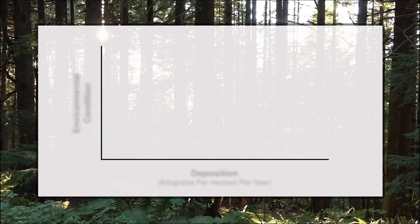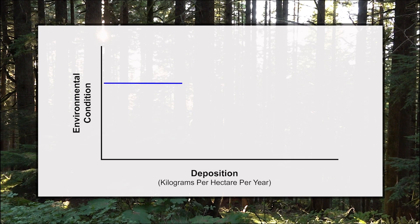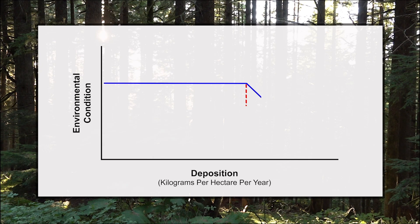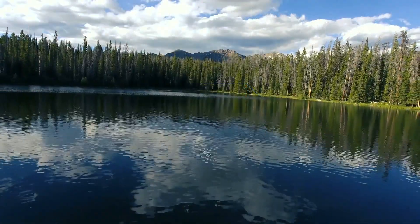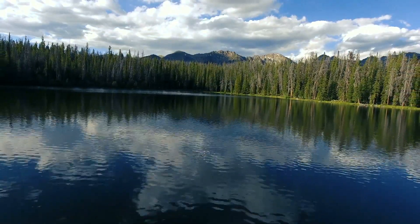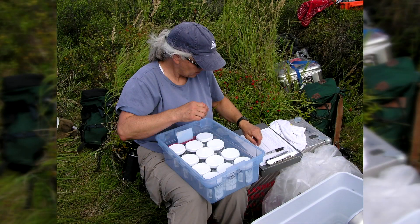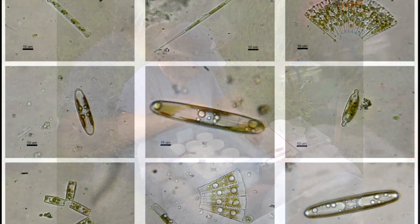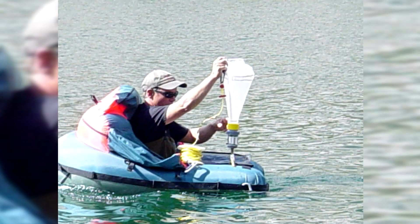This brings us to the concept of critical loads. Critical loads are used to identify when an ecosystem or a part of an ecosystem begins to experience harm from nitrogen deposition. Critical loads for nitrogen allow land managers to evaluate ecological impacts on high elevation lakes in the western United States. Critical loads developed for shifts in the most sensitive algae, diatoms, warn managers when nitrogen deposition or nutrient enrichment may be occurring in a water body.